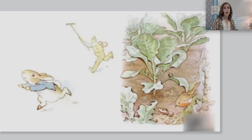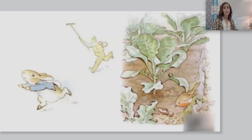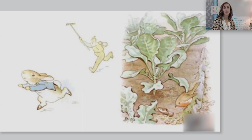Let's keep reading. Mr. McGregor was on his hands and knees planting out young cabbages, but he jumped up and ran after Peter, waving a rake and calling out, stop thief! Peter was most dreadfully frightened. He rushed all over the garden for he had forgotten the way back to the gate. He lost one of his shoes among the cabbages and the other shoe amongst the potatoes. When I read about how Peter is terribly frightened, it makes me wonder how he forgot how to get back to the gate. Knowing his father was captured by Mr. McGregor, I can imagine Peter being so afraid that he couldn't think correctly. Let's pause and note that Peter lost one of his shoes in the garden — please add that to your note catcher.